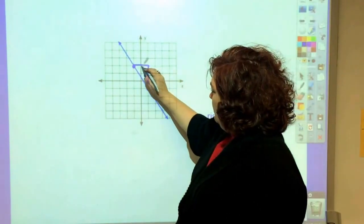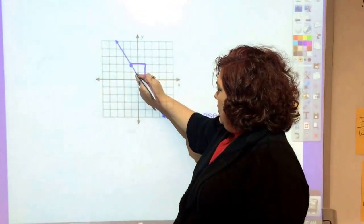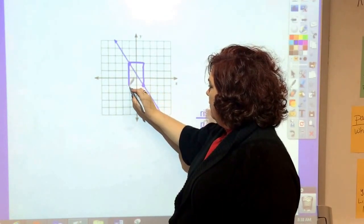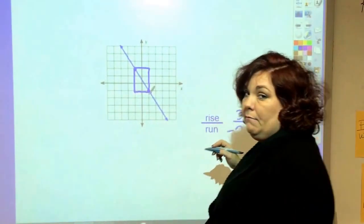My run is 1, 2, negative 2. And if I do it this way, I'm going to put negative 3, positive 2. It doesn't matter which one.